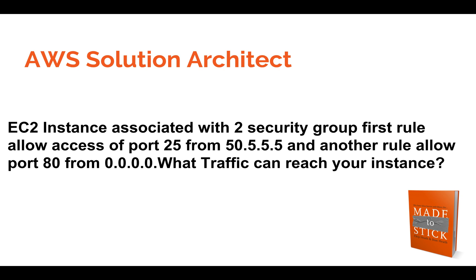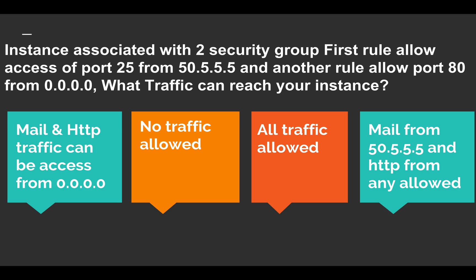The next question: an EC2 instance is associated with two security groups. The first rule allows access from port 25 with source IP 50.5.5.5. The second rule allows port 80 from IP 0.0.0.0. What traffic can reach your instance? So there are two rules: port 25 from the specific IP 50.5.5.5, and port 80 open to all IPs.